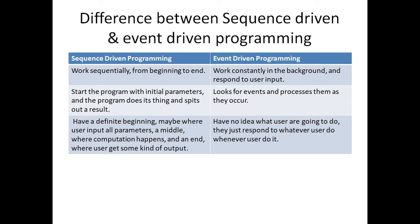Sequence driven programming may have a beginning where the user inputs all parameters, a middle where computation happens, and an end where the user gets some kind of output. Event driven programming has no idea what users are going to do — it just responds to whatever the user does, whenever they do it.